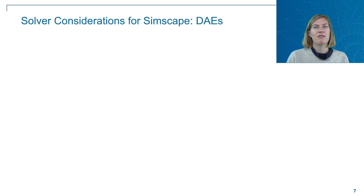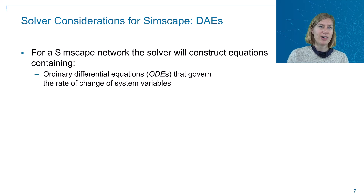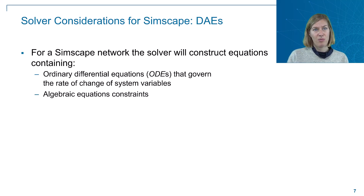However, there's an additional consideration you have to make when working with Simscape: it constructs DAEs, or differential algebraic equations. When you hit run on a model containing a Simscape network, one of the first steps will be to construct an equation system. For the Simscape network, this will typically result in both ODEs, or ordinary differential equations — the equations that describe the rate of change of system variables — and algebraic equation constraints. Typically both are present, which results in a DAE, or differential algebraic equation system.